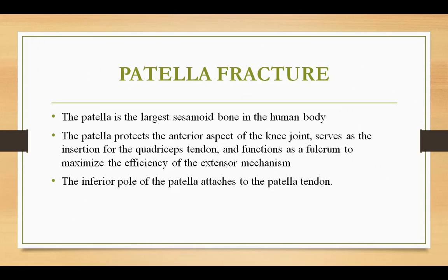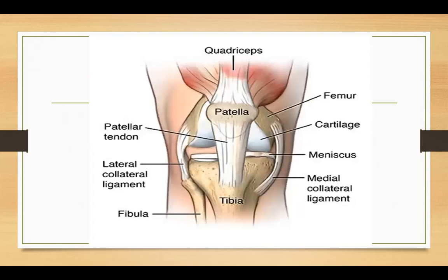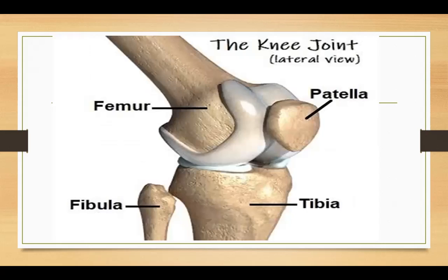The next topic is patella fracture. The patella is the largest sesamoid bone in the human body. It protects the anterior aspect of the knee joint, serves as an insertion for the quadriceps tendon, and functions as a pulley to maximize the efficiency of the extensor mechanism. The inferior pole of the patella attaches to the patellar tendon, while the upper pole attaches to the quadriceps. In this image you can see the knee joint showing the distal femur, proximal tibia, fibula, and the patella.